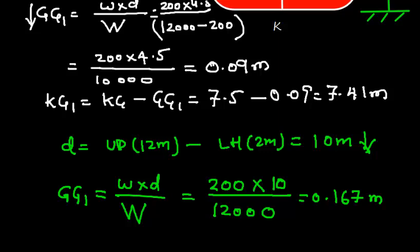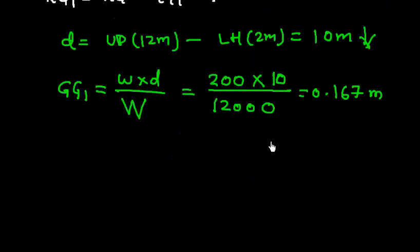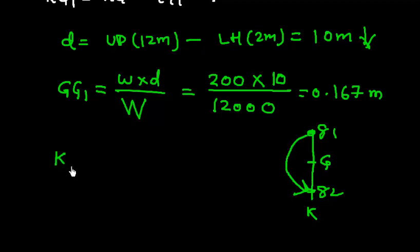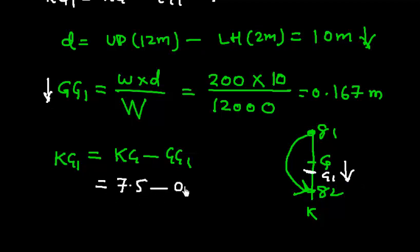Since I shifted this weight, I can draw the straight line. So this was K and this was G. KG1 was here and KG2 was here. So I shifted something from top to bottom like this, so my KG2 will be KG minus GG1. Because I shifted something from top to bottom, my GG1 will also go down. Well, KG was 7.5 and GG1 is 0.167, so I get this value 7.333 meter.